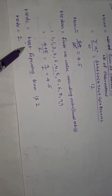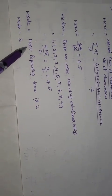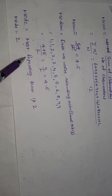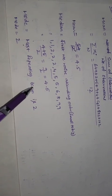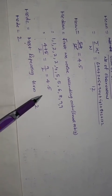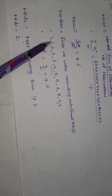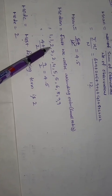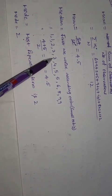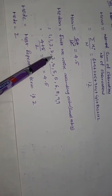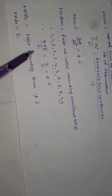Next, mode. Mode means the most repeating term in the series. The value 3 appears 2 times and the value 2 appears 3 times. So the mode is 2.